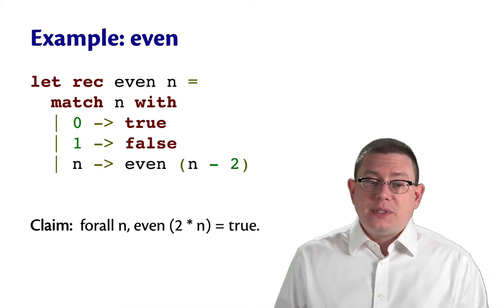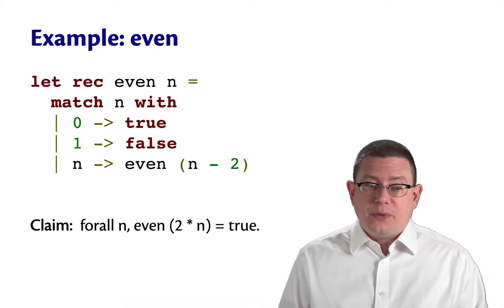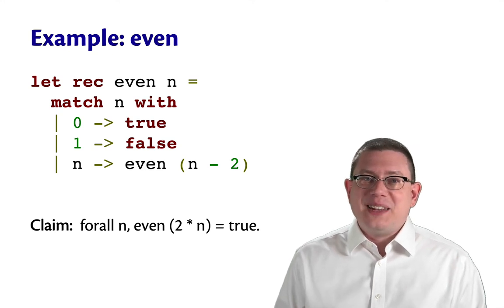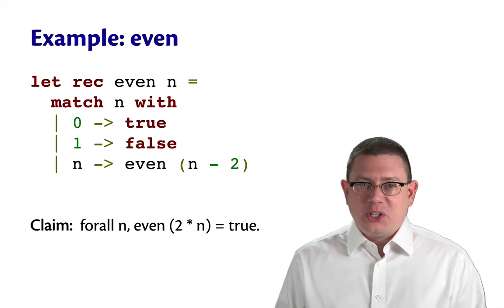We'll match n with 0 and return true. On 1, we'll return false. And on any other natural number n, we'll just deduct 2 from n and then recursively call even. Eventually, we get down to 0 or 1, and then eventually we can decide whether.